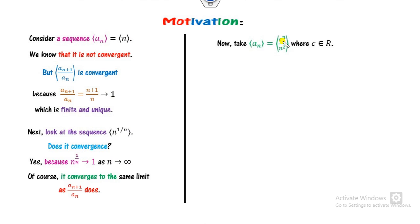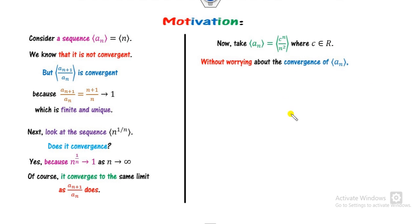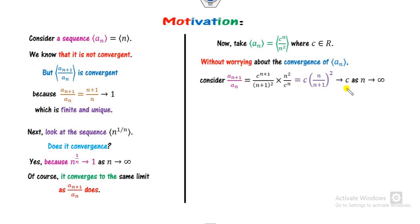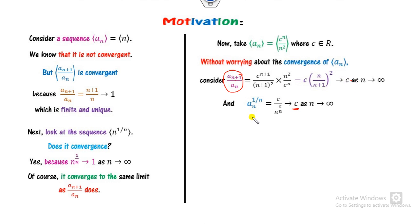Consider another sequence C raised to the power N upon N squared, where C is any real number — it can be minus 1, plus 3, minus 7, and so on. What can you say about the convergence of A_N? If you find A_{N+1} upon A_N, it converges to C, which is unique and finite, so it is convergent. And A_N raised to the power 1 by N also converges to C. Similarly, for the previous example, both converge to 1.